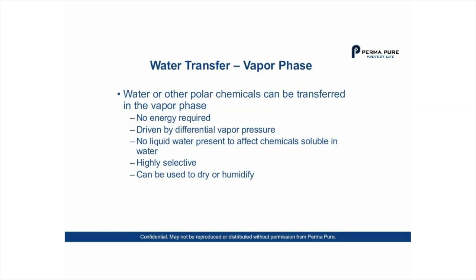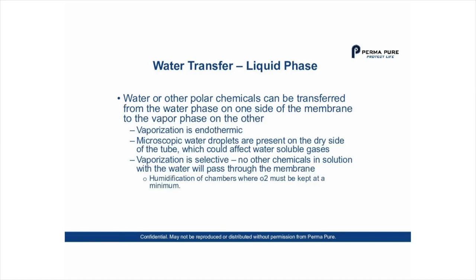In the vapor phase, water or other polar chemicals can be transferred with no energy required — it's driven by differential vapor pressure. No liquid water is present to affect chemicals soluble in water. It's highly selective and can be used to dry or humidify. In the liquid phase it's a little different: water or other polar chemicals are transferred from the water phase on one side to the vapor phase on the other. Remember that vaporization is endothermic, so unless the water or membrane is heated, temperature will drop over time.